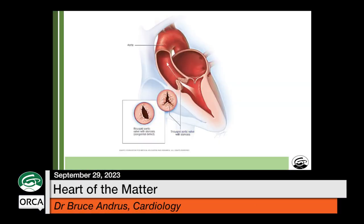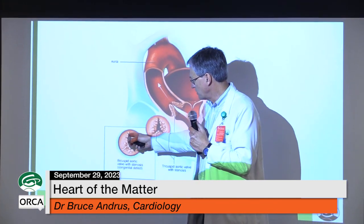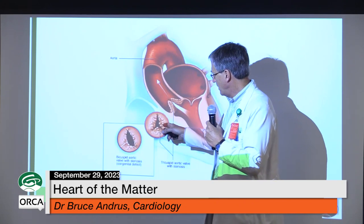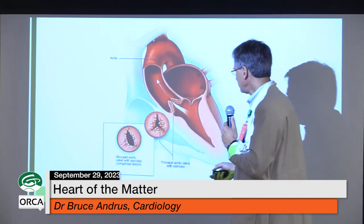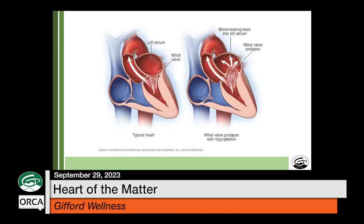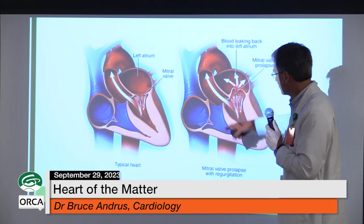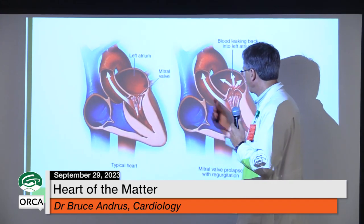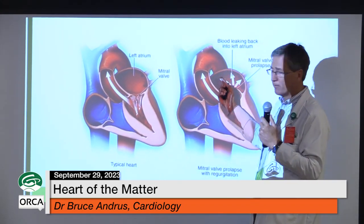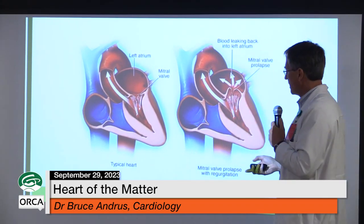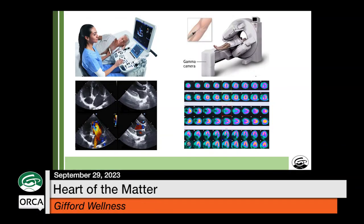Some people are born with a bicuspid aortic valve — two leaflets instead of the normal three — affecting about one percent of the population. They're subject to premature narrowing of the aortic valve, which creates resistance to blood flow. A leaky mitral valve creates a volume load on the left ventricle — the heart pumps the same blood over and over, as blood that should go forward leaks back through the inlet valve, disadvantaging the heart.